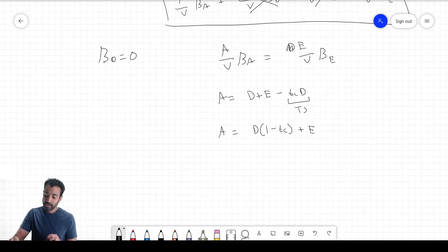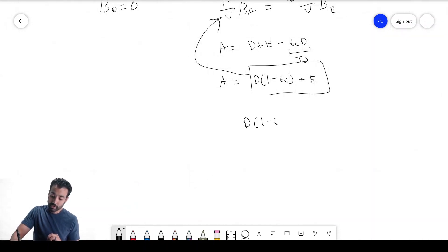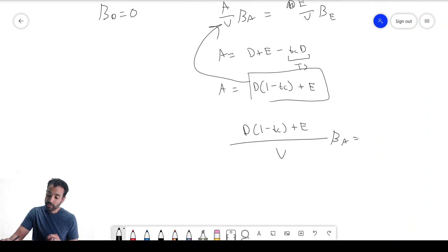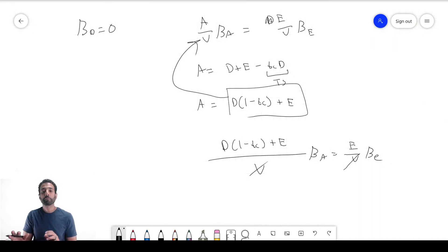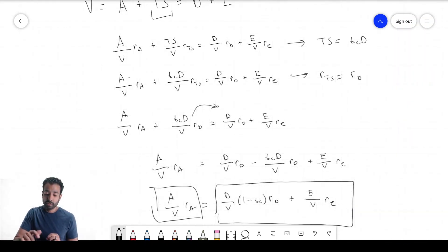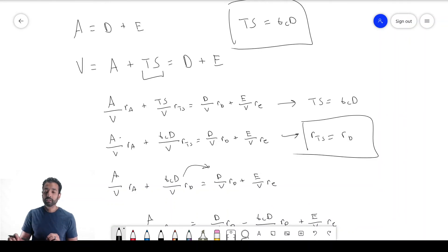Now you can take this and plug it back, so you have D(1 minus TC) plus E divided by V times beta A equals E over V times beta E. You can multiply both sides by V, get rid of this. You start to see that all these equations you're memorizing and putting in your cheat sheets—they're all coming from this with two main assumptions. It's a weighted average cost of capital. It's not rocket science, not magic. It's coming from this: averaging returns, averaging betas, and making some simple assumptions. So that's WACC.